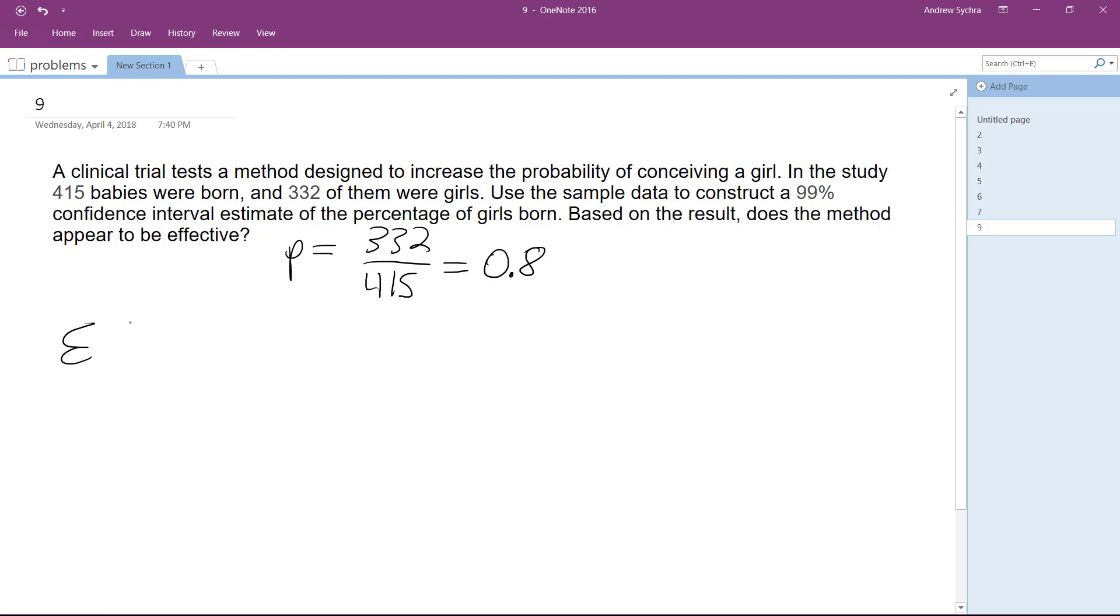So E, our error, because we're going to eventually do P plus or minus E, is equal to our Z-critical times the square root of P times Q all over N. We have P up here, so our confidence interval is going to be...